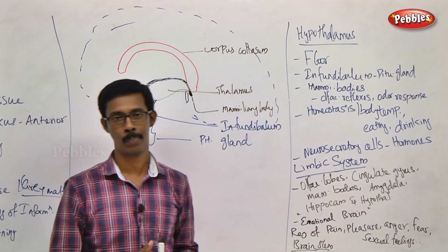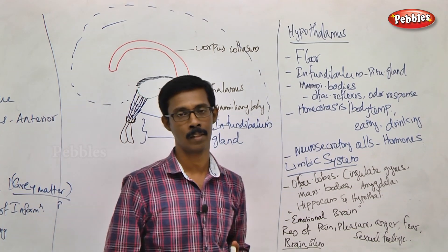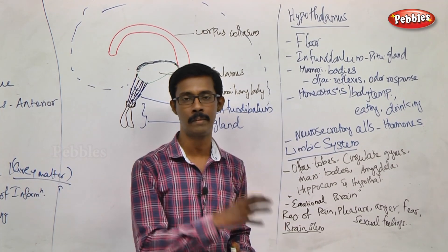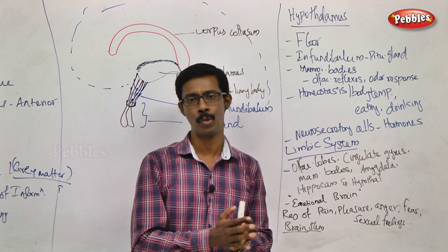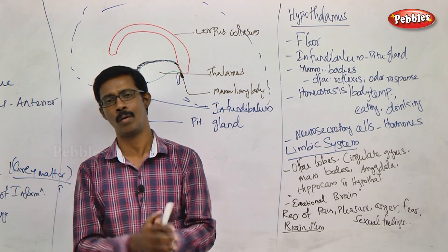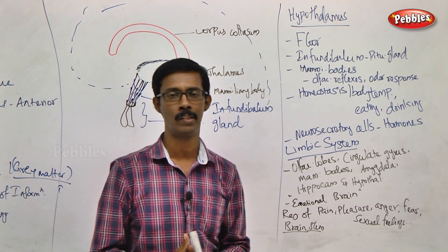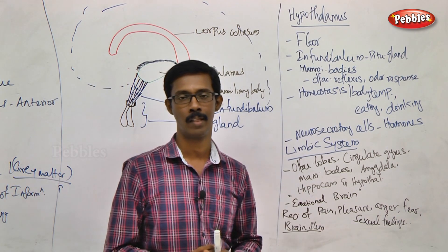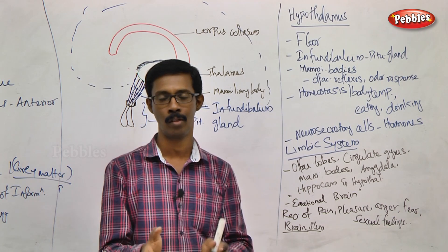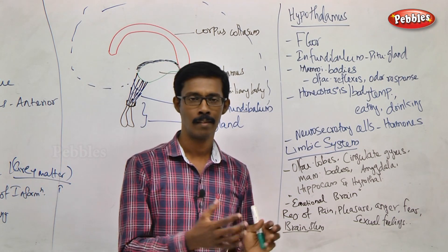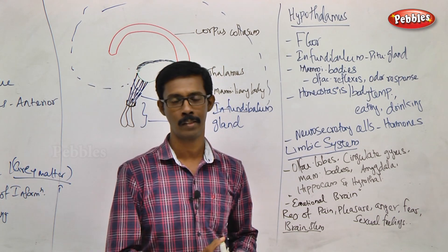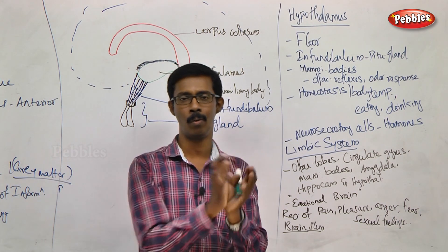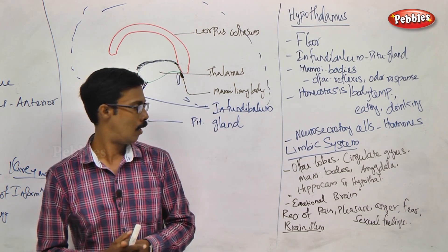Now we have a general term to discuss: the Limbic System. The limbic system involves the middle brain or forebrain. There is a group of areas forming the limbic system — some portions belong to the cerebral region, some belong to the Diencephalon region, and some belong to the midbrain region. This brain inner core or middle region is called the limbic system.